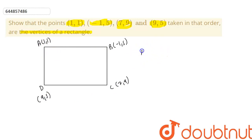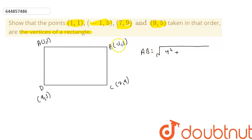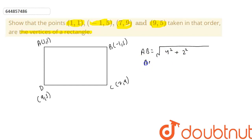Now we are going to calculate the side length AB first. Using the distance formula, AB equals the square root of (5 minus 1) squared plus (-1 minus 1) squared, which is the square root of 4 squared plus 2 squared, giving us the square root of 16 plus 4, so AB equals √20 units.